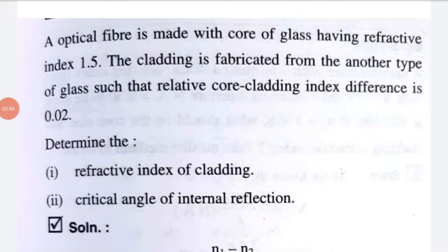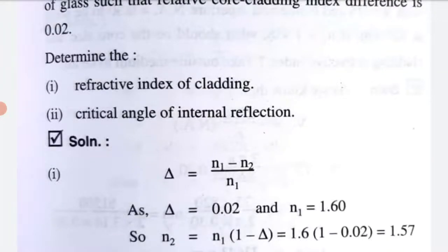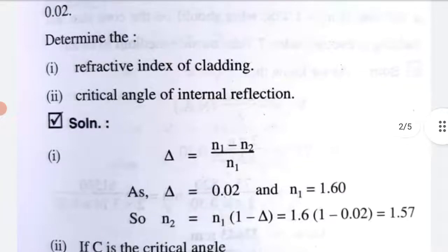Second example: an optical fiber is made with a core of glass having refractive index N1 = 1.6. The cladding is fabricated from another type of glass such that the relative core-cladding index difference Δ = 0.02. Determine the refractive index of cladding. Since Δ = (N1 − N2)/N1 = 0.02, we get N2 = N1(1 − Δ) = 1.6 × (1 − 0.02) = 1.57.